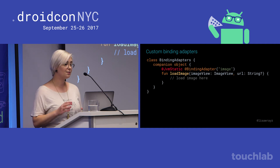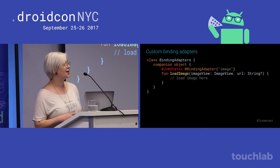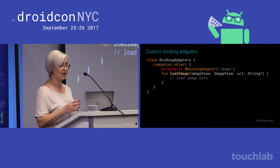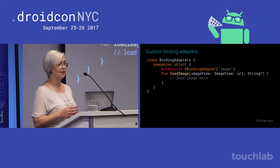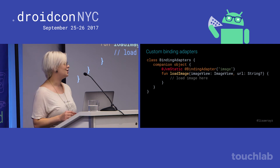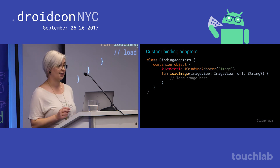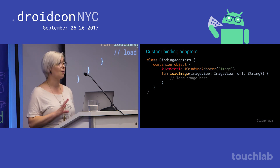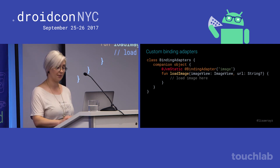Another place you can put binding adapters is inside a companion object, if you'd rather do that. You still need to remember the binding adapter annotation and you need to annotate the method with @JvmStatic. Especially as a Kotlin beginner, that one was not obvious to me.